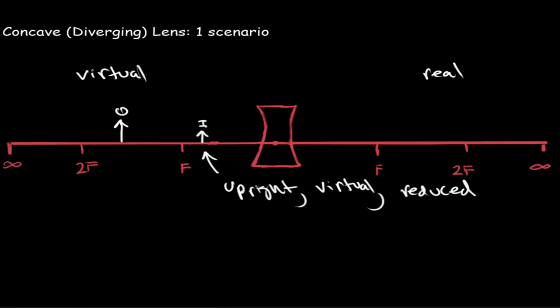If you move the object closer to the lens, the image will get larger. If you move your object further away from the lens, your image will be smaller.